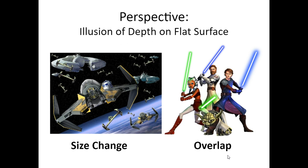Another way the audience can tell if something is closer or further away is overlap. Overlap is when you can see all of one object, and you can only see part of another object because it is either behind or in front of it. For example, Yoda is smaller than all the other objects, but we can see all of him. So that means he is in front of these other characters, even though he is smaller.